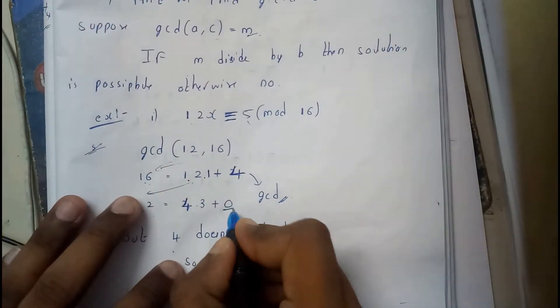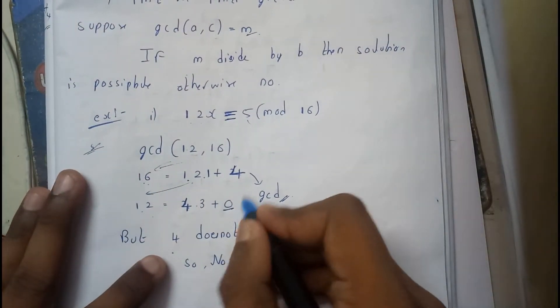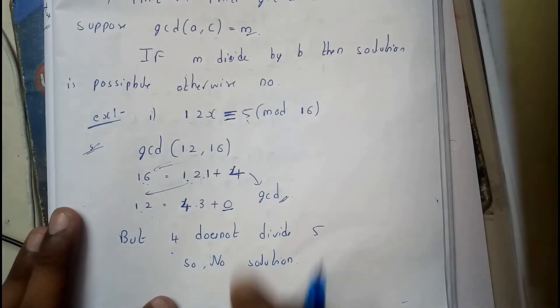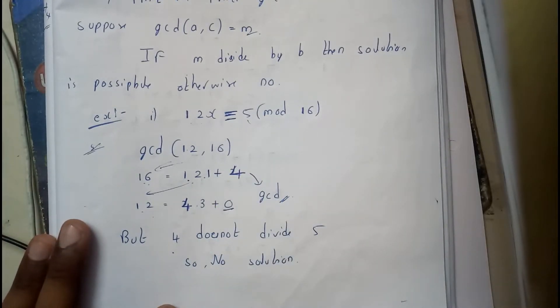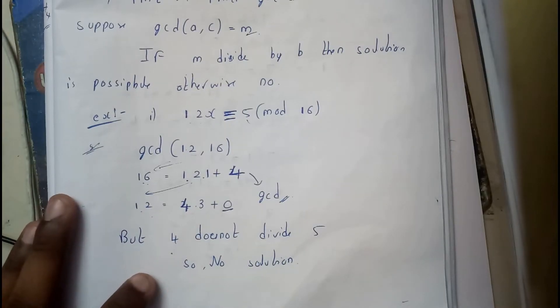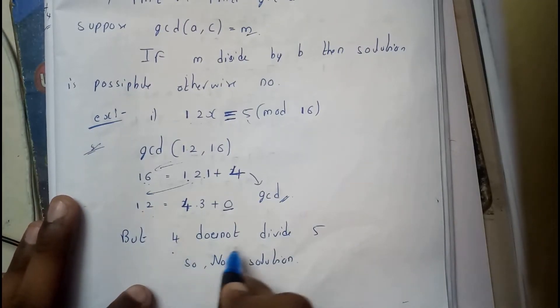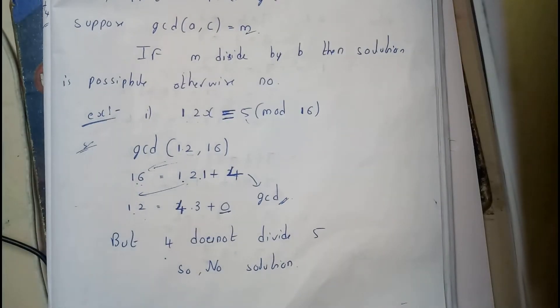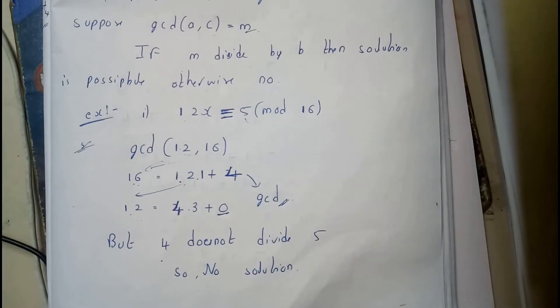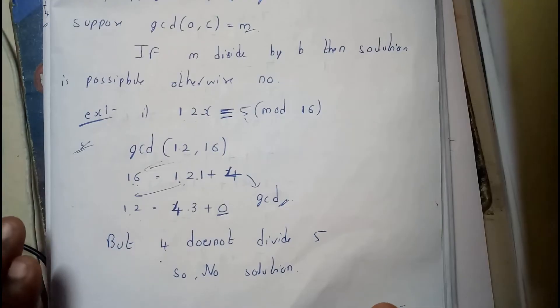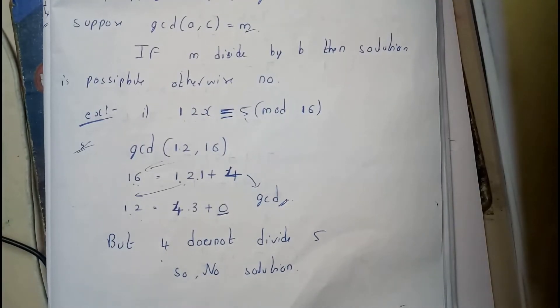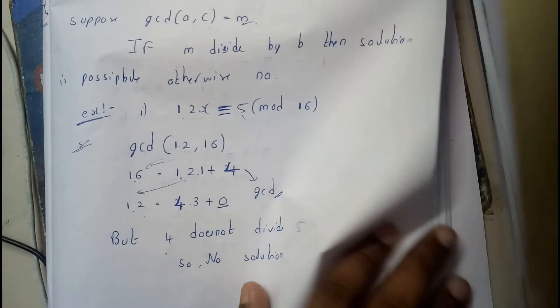So whatever it is above 0, it is the GCD. I hope everyone understood what GCD is. But 4 does not divide 5. Is 4 divided by 5? No. Hence there is no solution for this problem. I hope you got a small basic idea. In the next problem we'll be having a solution, don't worry.